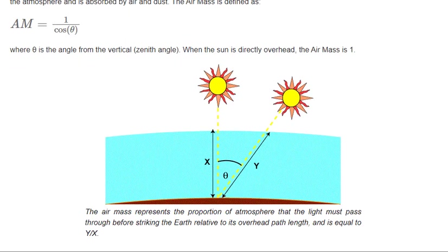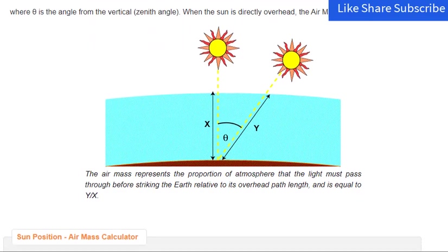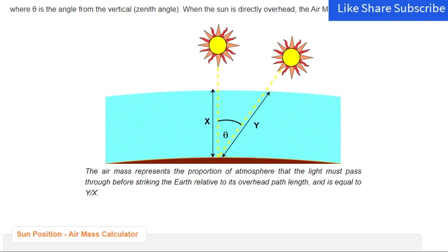where theta is the angle from the vertical zenith angle. When the sun is directly overhead, the air mass is 1. The air mass represents the proportion of atmosphere that the light must pass through before striking the earth relative to its overhead path length, and is equal to Y/X.